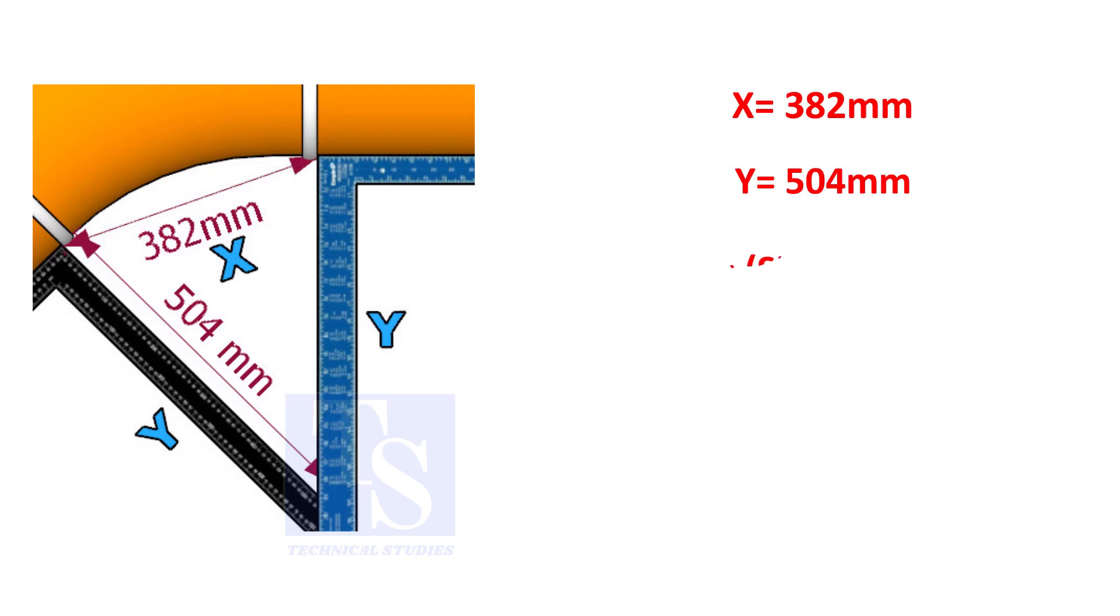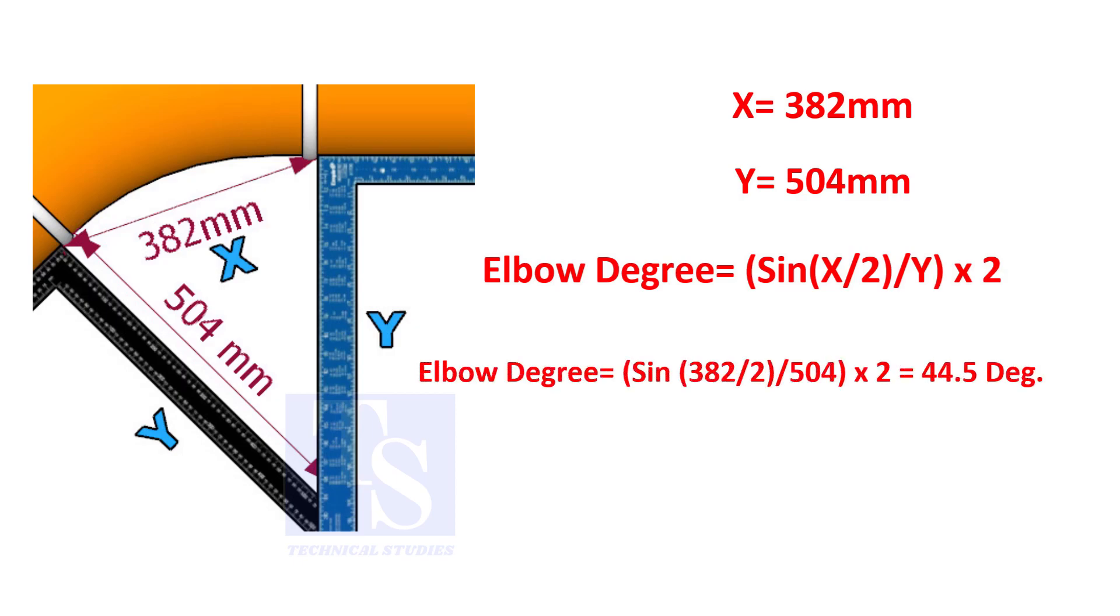Assume that the value of X is 382 and the value of Y is 504. Divide the half value of 382 by 504 and convert the value to sine. Then multiply by 2.